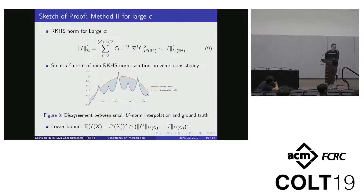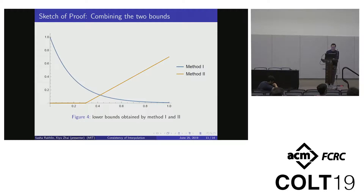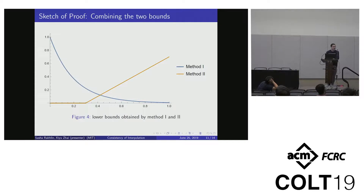For large C, the RKHS norm becomes essentially the L2 norm, so the interpolating solution has very small L2 norm — corresponding to the rope dangling to the ground. In this case, we can argue there is a lower bound using the triangle inequality. If our control of the L2 norm is not tight enough, the bound becomes vacuous. Drawing the bounds against C: method two (large C) is vacuous for small C but non-vacuous for large C, while method one (small C) is always non-vacuous but the lower bound decreases with C. Combining both methods yields a uniform bound for all C.